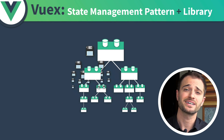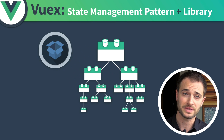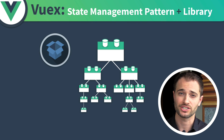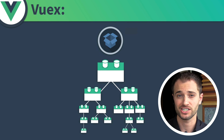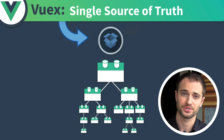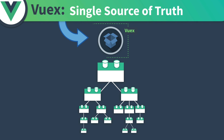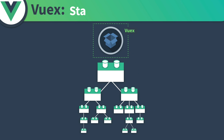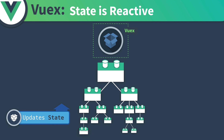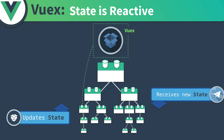Instead, we can consolidate all of our state into one place — one location that contains the current state of our entire application, one single source of truth. This is what Vuex provides, and every component has direct access to this global state. And just like the Vue instance's data, this global state is reactive. So when one component updates the state, other components that are using that data get notified, automatically receiving the new value.